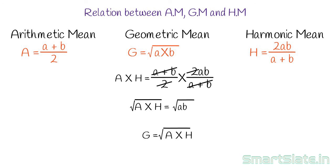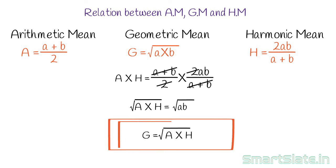The geometric mean of two numbers is equal to the square root of its arithmetic mean and harmonic mean, i.e., g = √(a × h).